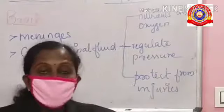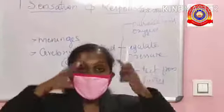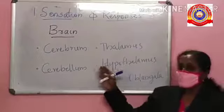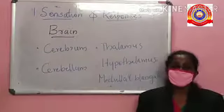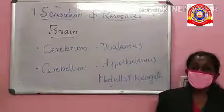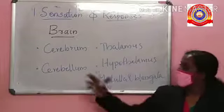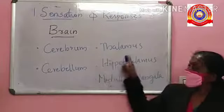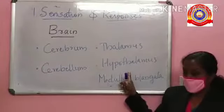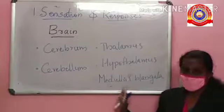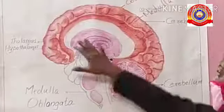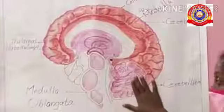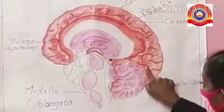The brain is the controller of the whole body. The brain contains parts such as cerebrum, cerebellum, thalamus, hypothalamus, and medulla oblongata.